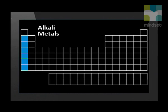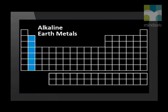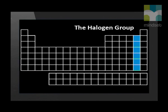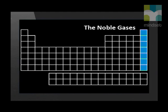If we look at the periodic table, we will remember that group 1 is called the alkali metals. Group 2, the alkaline earth metals. Group 17 are the halogens, and group 18 are called the noble gases.